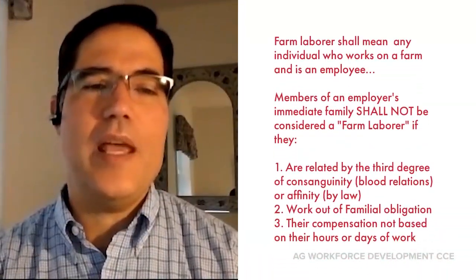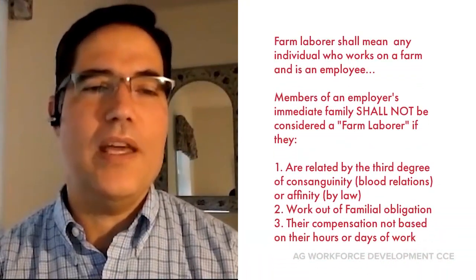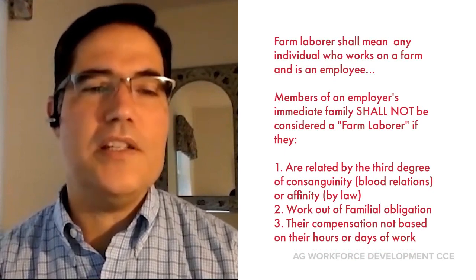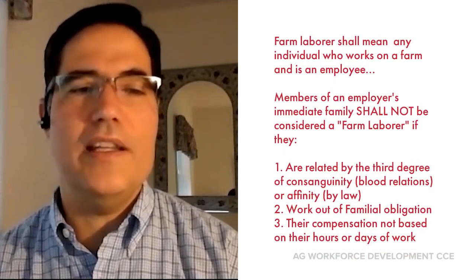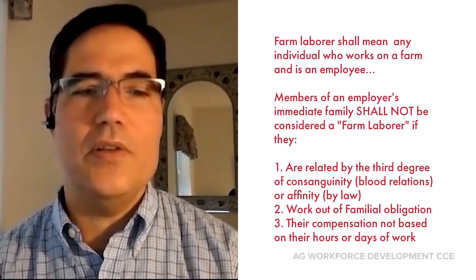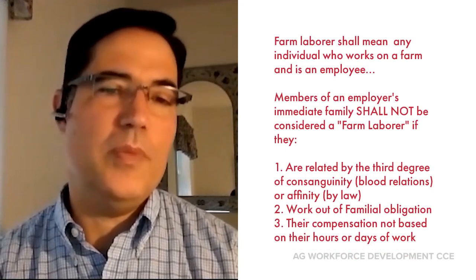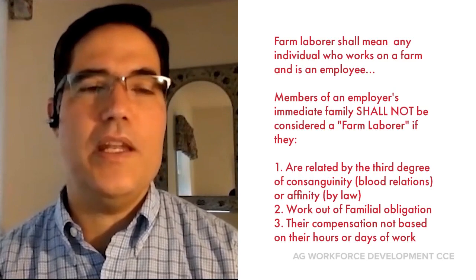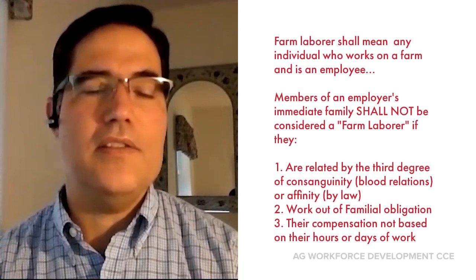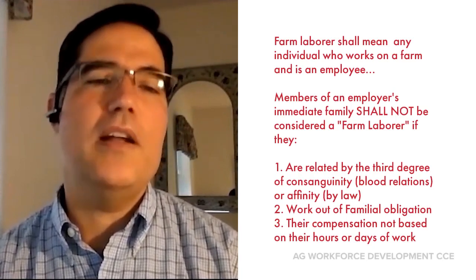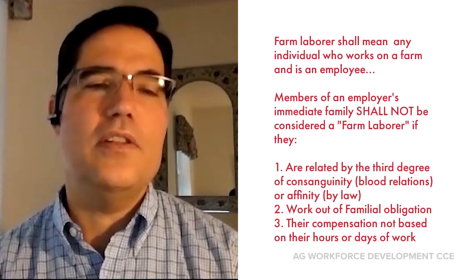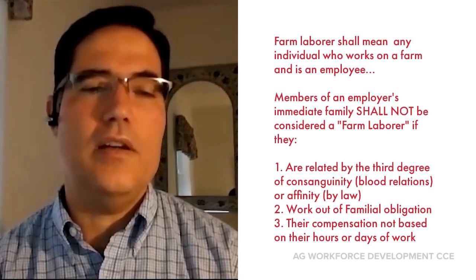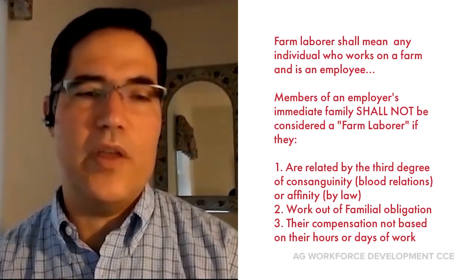This definition of a family member has three pieces: consanguinity — blood relations — or affinity, that's the marital relations. So it could be adoption or it could be marriage. By law, it has to be within the third degree, which is essentially up to your great grandparents and down to your grandchildren, and then over to your nieces and nephews, and of course covering your brothers and sisters.